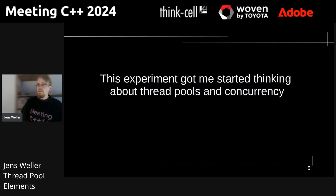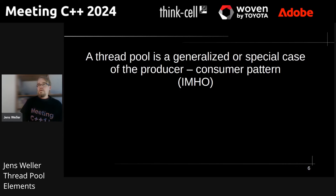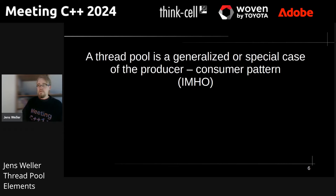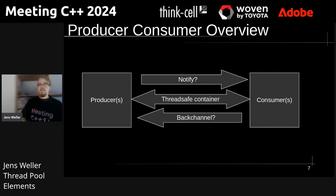This experiment got me started thinking about concurrency, thread pools, and what we currently can do with C++. Through this, the opinion came together that a thread pool is a generalized or special case of the producer-consumer pattern. So I'll start with looking at how this is usually set up and what the means of things we use with that are. The producer-consumer overview — this pattern is pretty common.